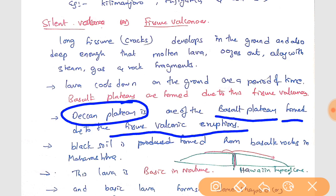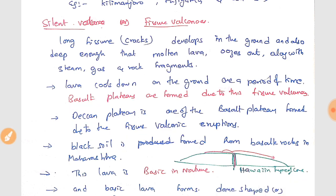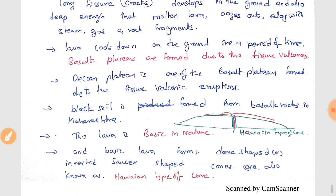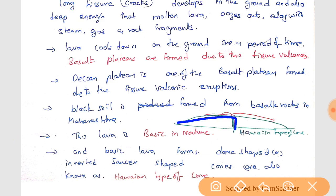Most of the Deccan Plateau has black soil, and the basalt rocks are formed due to once-upon-a-time fissure volcanic eruptions which are basic in nature. Another example is the Hawaiian type of cone — the cone formed from basaltic or basic lava is of very less height but very large area. It is in the shape of an inverted saucer.